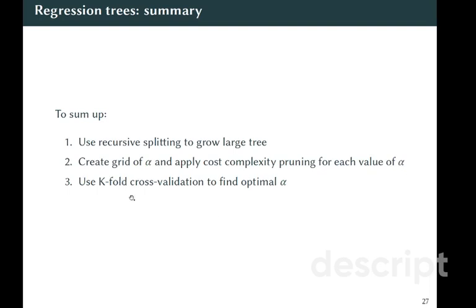And then we use k-fold cross-validation to find optimal alpha. And we ask to return the subtree that corresponds to the optimal alpha. And we use this pruned subtree to predict for new observations.